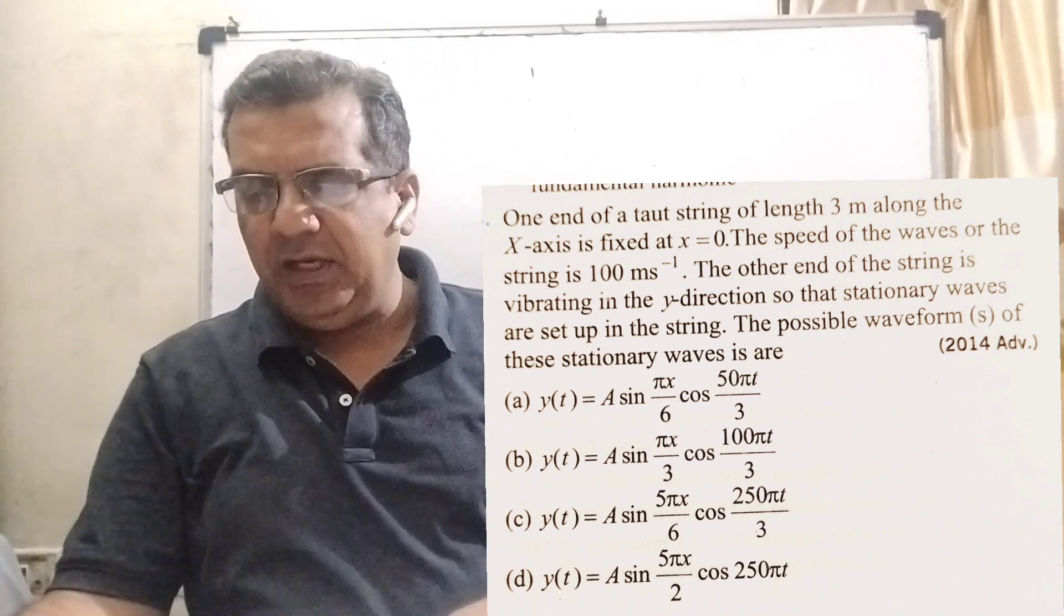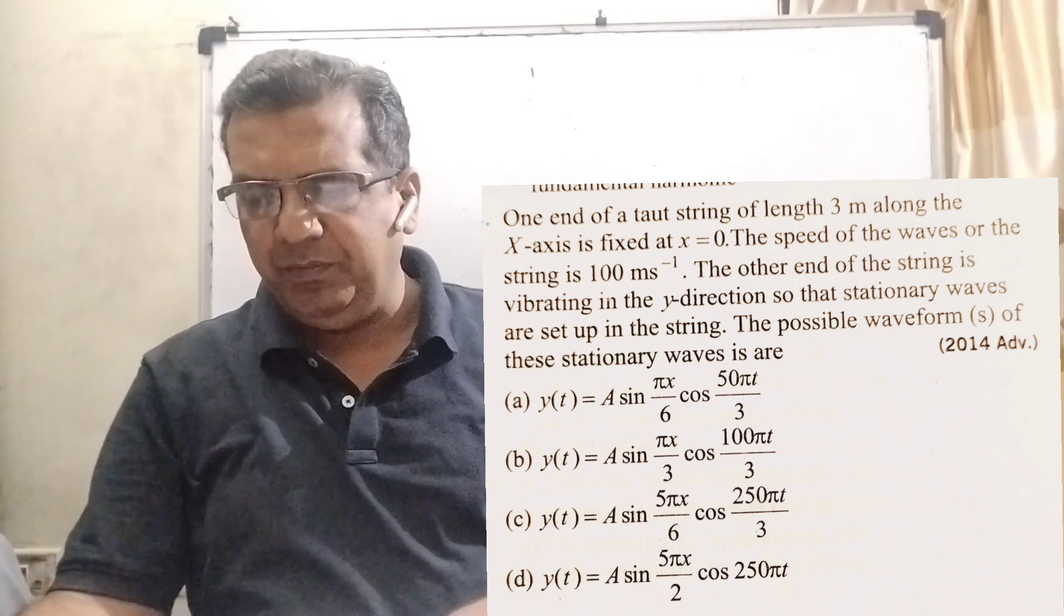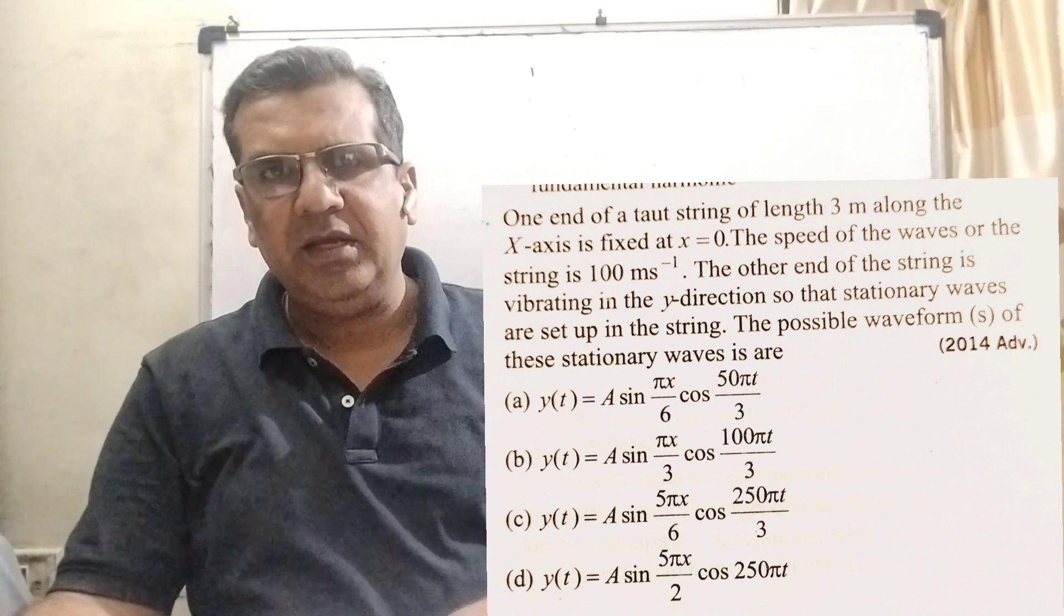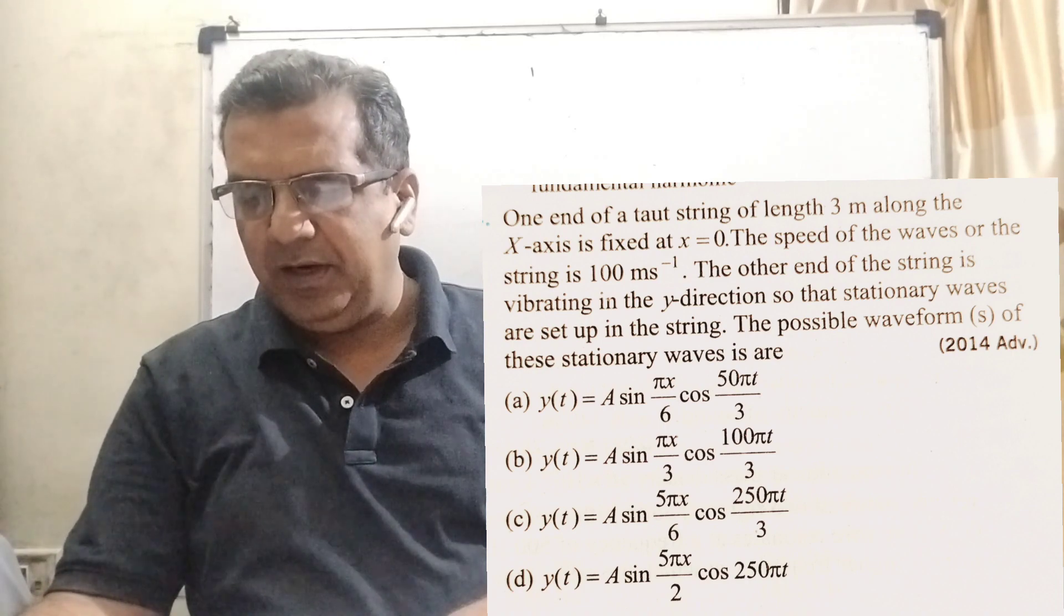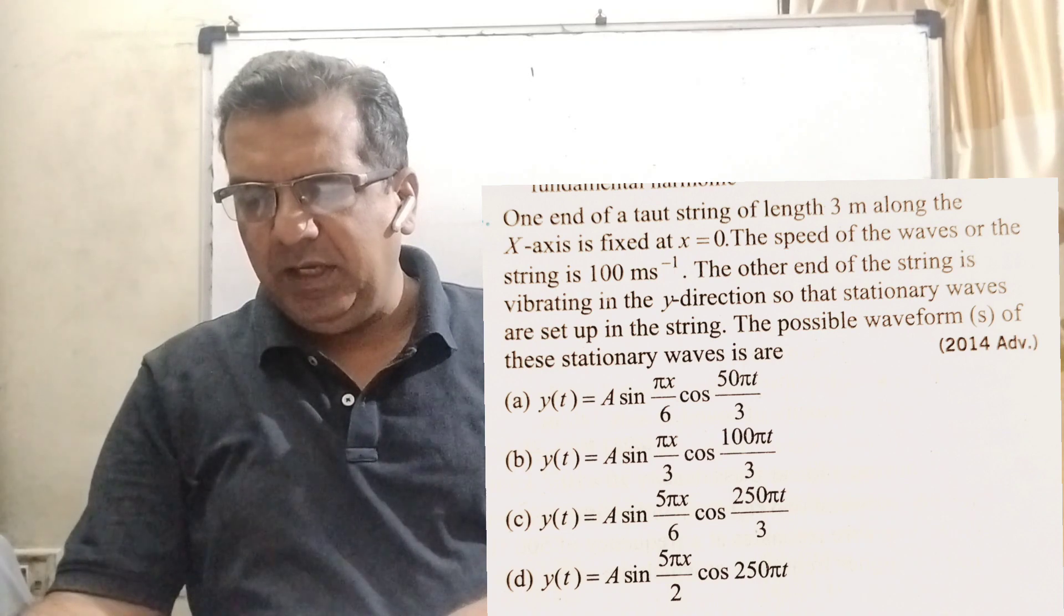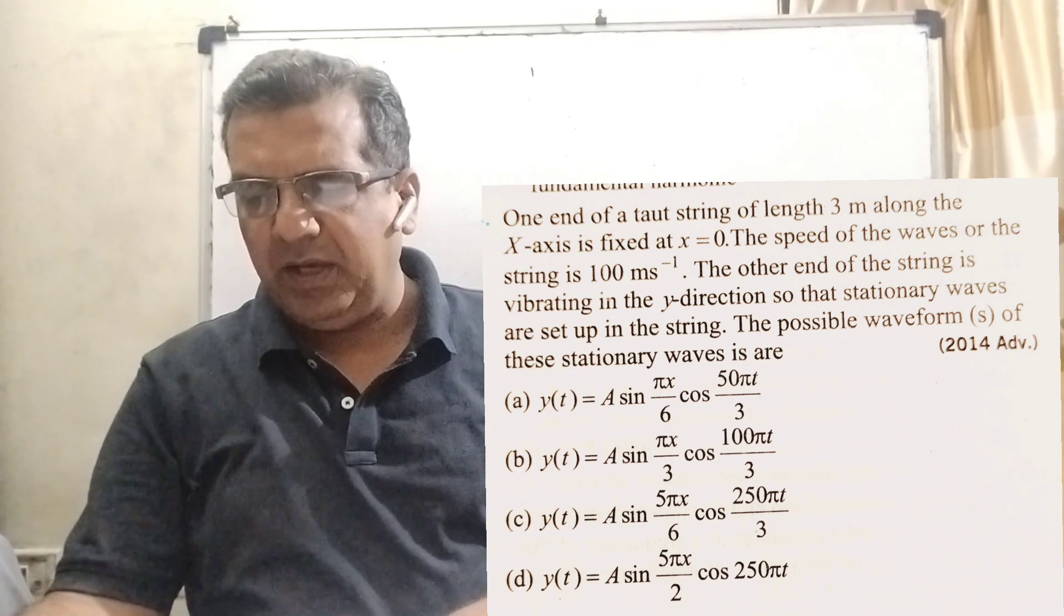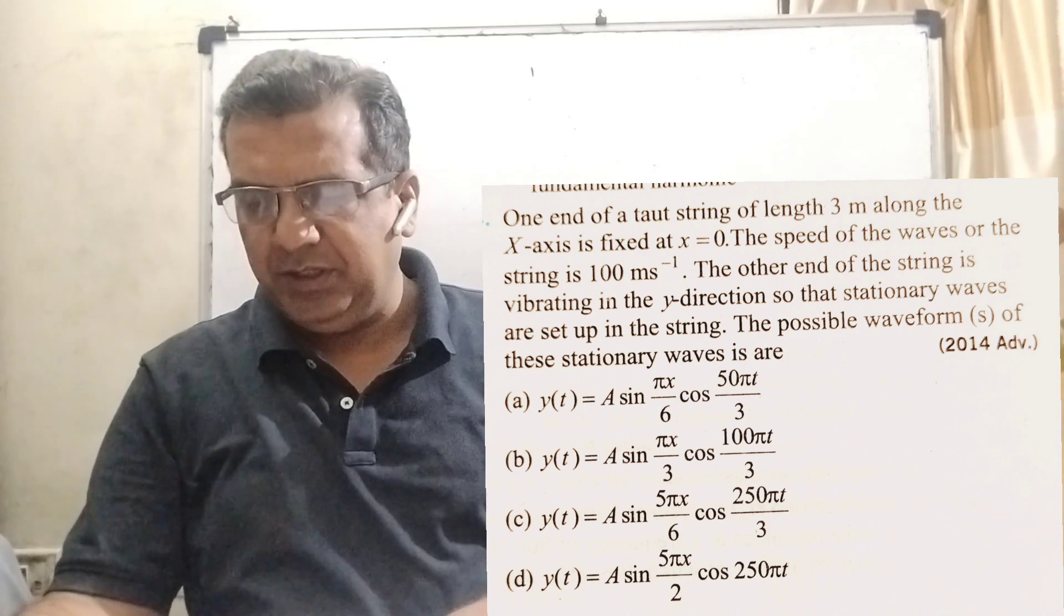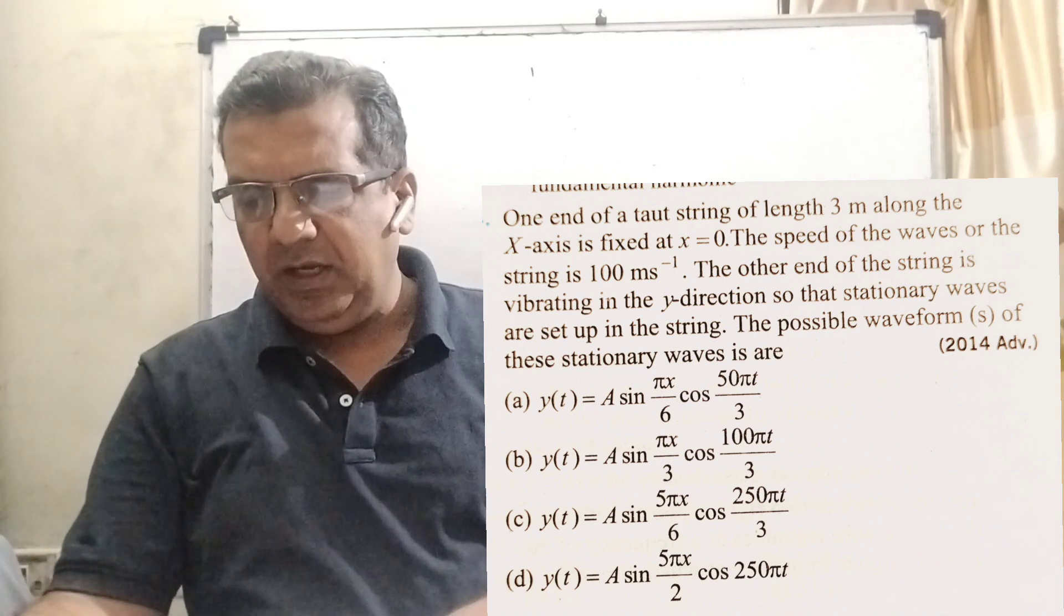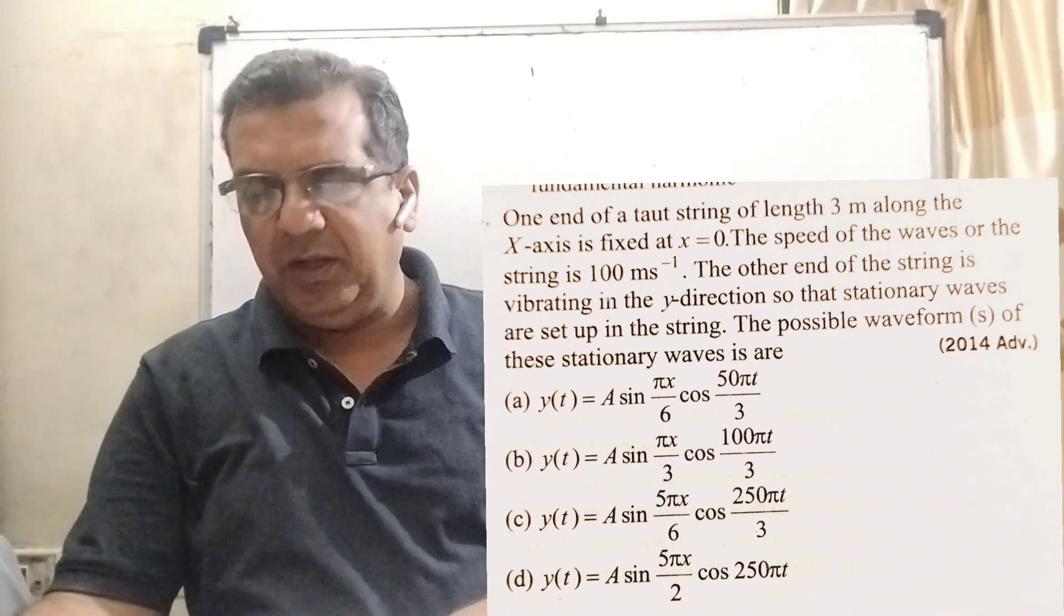Option A: y equal to a sin pi x by 6 cos 50 pi t by 3. Option B: y equal to a sin pi x by 3 cos 100 pi t by 3. Option C: y equal to a sin 5 pi x by 6 cos 250 pi t by 3. Option D: y equal to a sin 5 pi x by 6 cos 150 pi t.